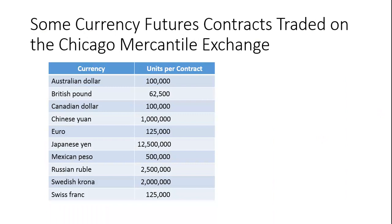In terms of standard contract sizes, here are a few of the currency futures contracts traded on the Chicago Mercantile Exchange. Australian dollars: 100,000. British pounds sterling: 62,500. Japanese yen: the standard contract is 12,500,000 yen, and so on.